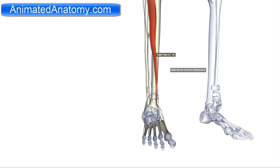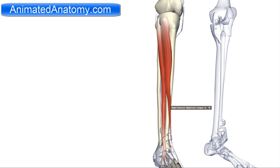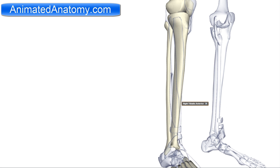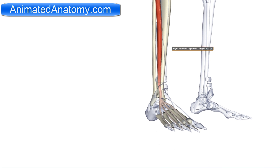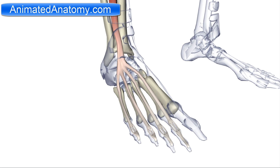Then we have the extensor digitorum longus. It has its origin on the lateral condyle of the tibia and the superior interosseous membrane — the membrane between the tibia and fibula. The insertion of this muscle is the middle and distal phalanges of the four lateral toes.